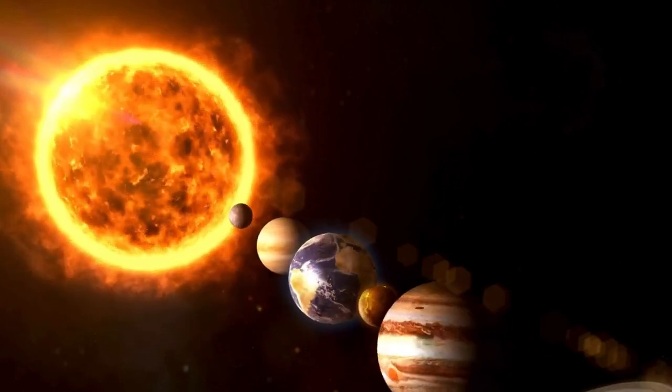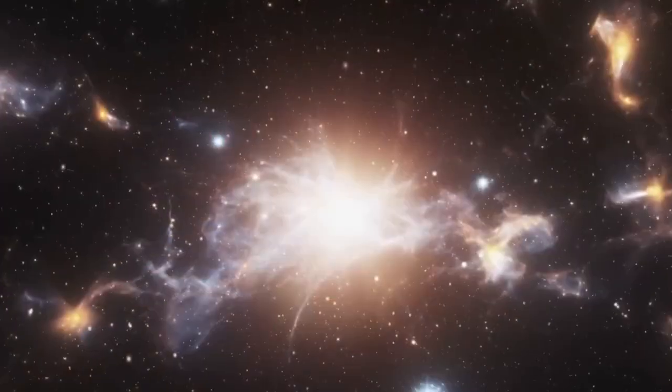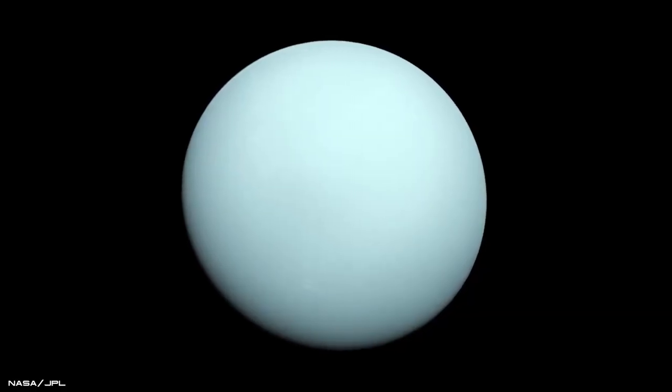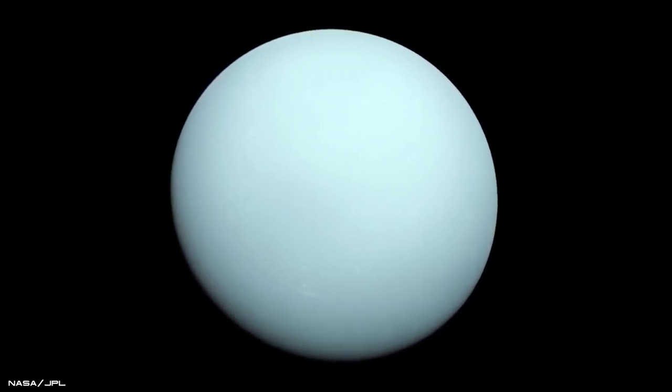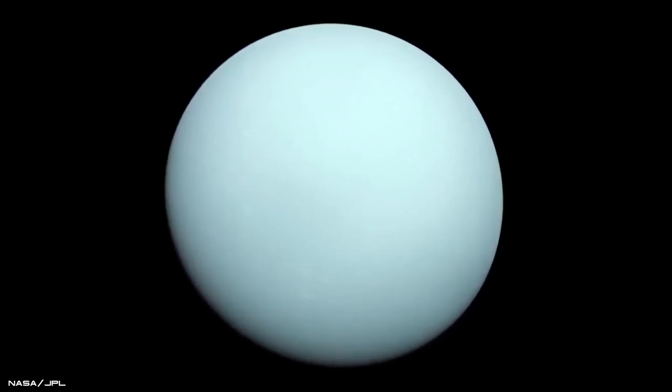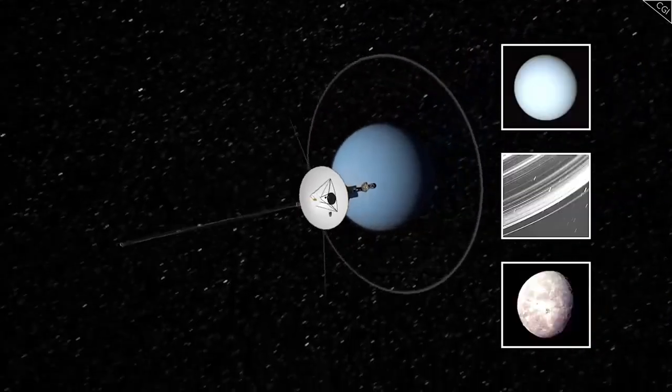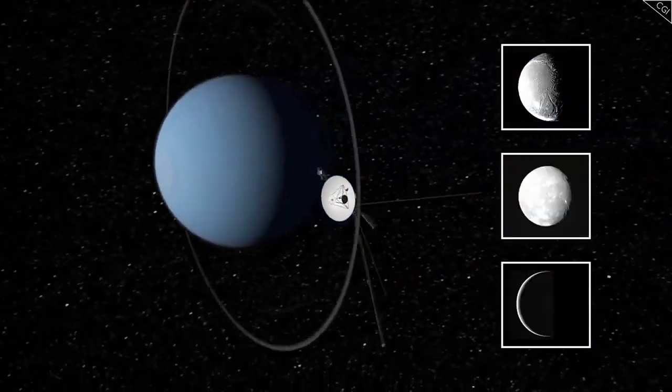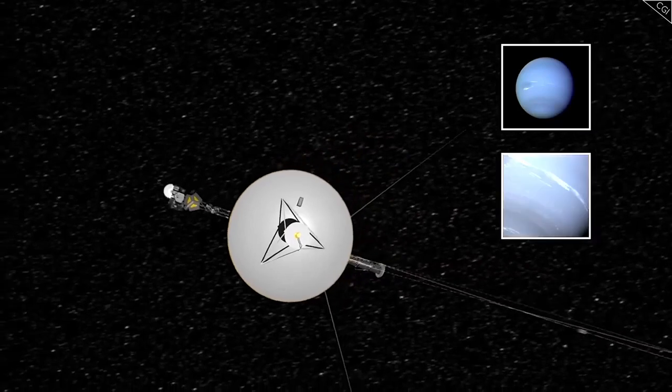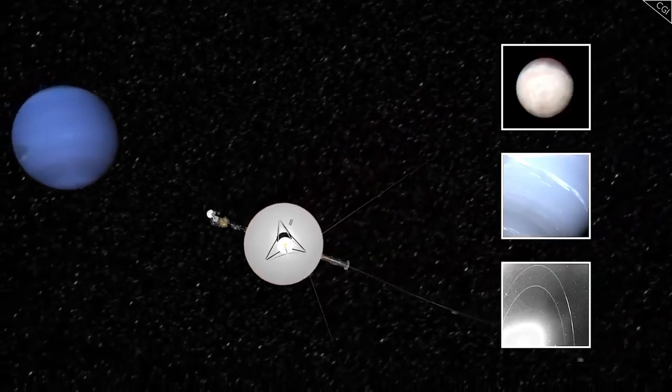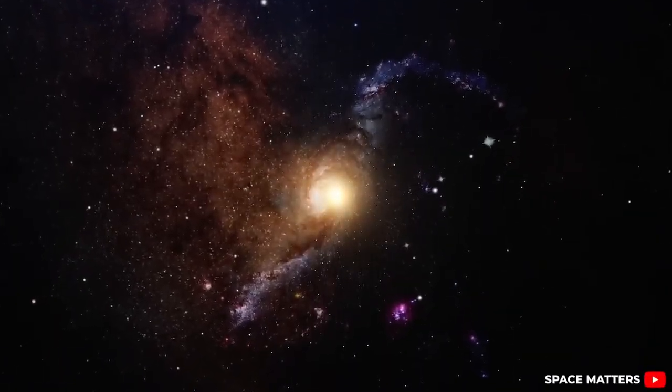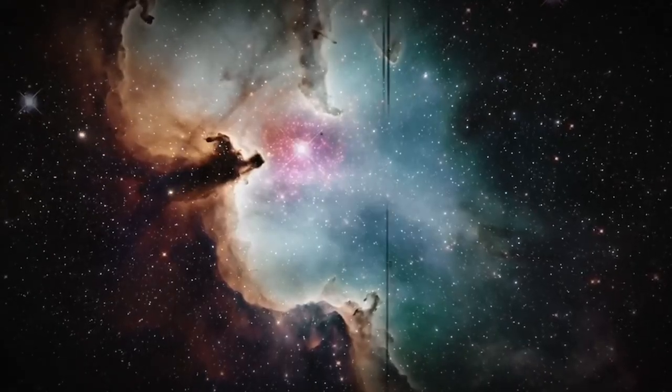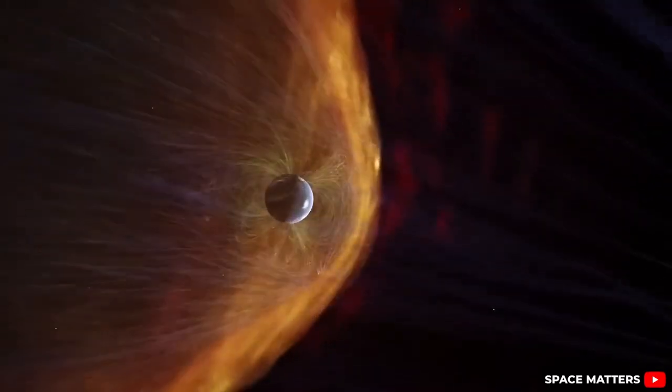When Voyager 1 crossed the heliopause in 2012, it provided the first-ever glimpse of this mysterious region. However, interpreting its data posed challenges. Scientists discovered that the interstellar magnetic field was two to three times stronger than expected, suggesting that interstellar particles exert up to ten times more pressure on the heliosphere than previously thought. Still, Voyager 1's revelations were incomplete. Its plasma instrument had failed in 1980, leaving gaps in the data.